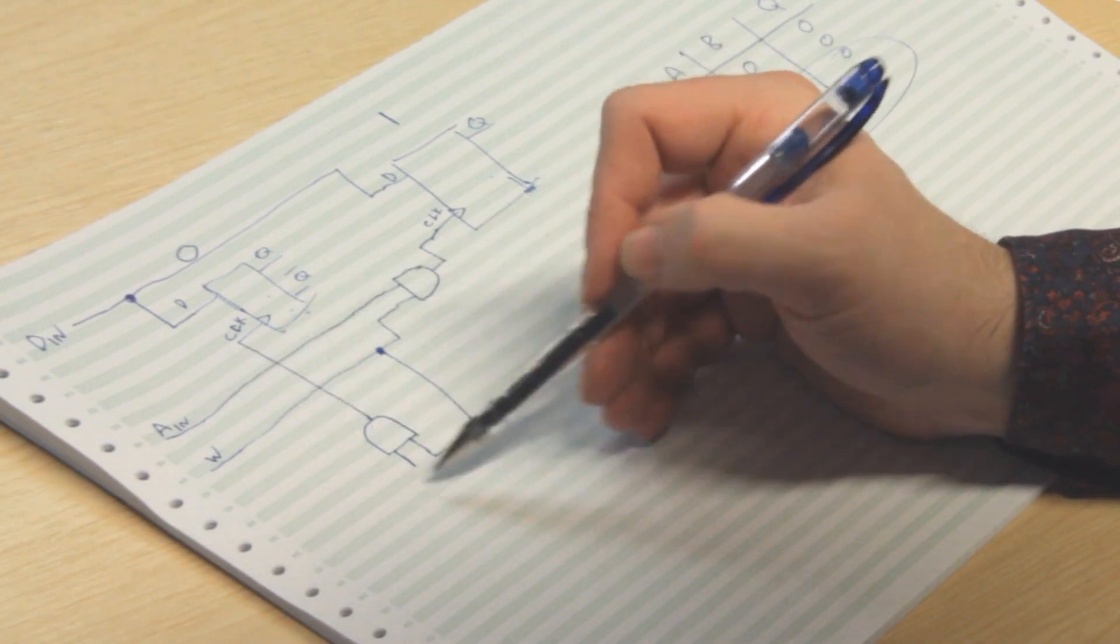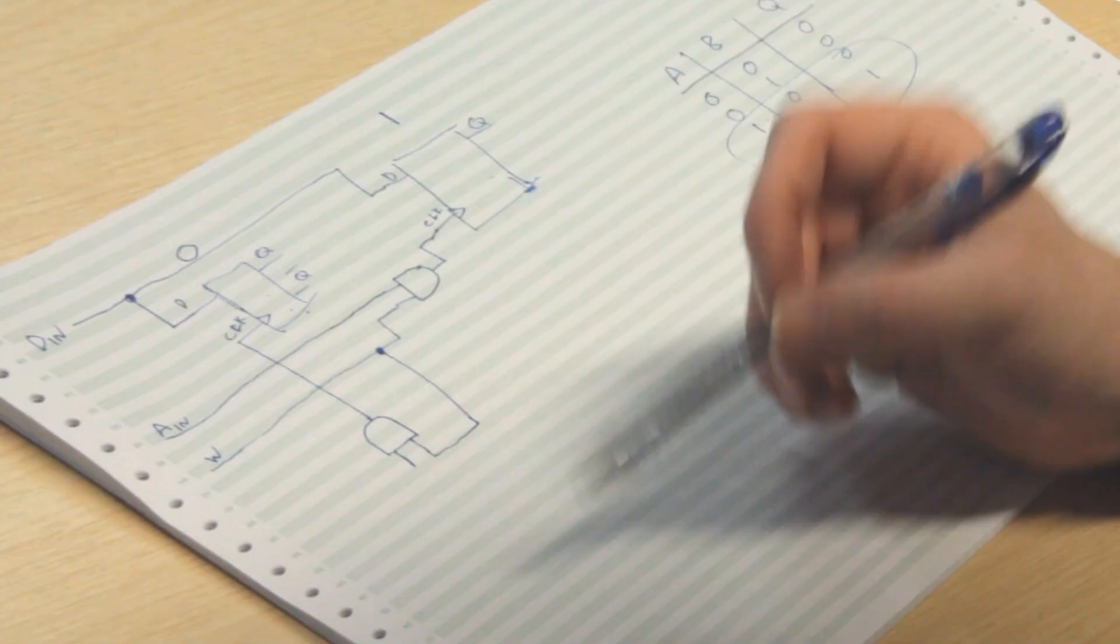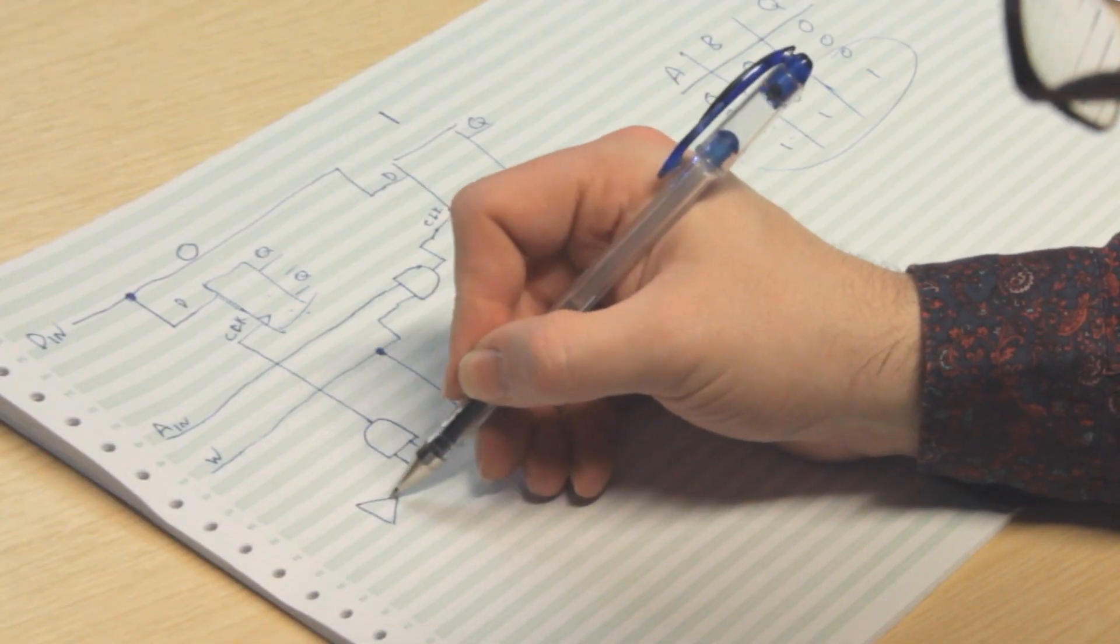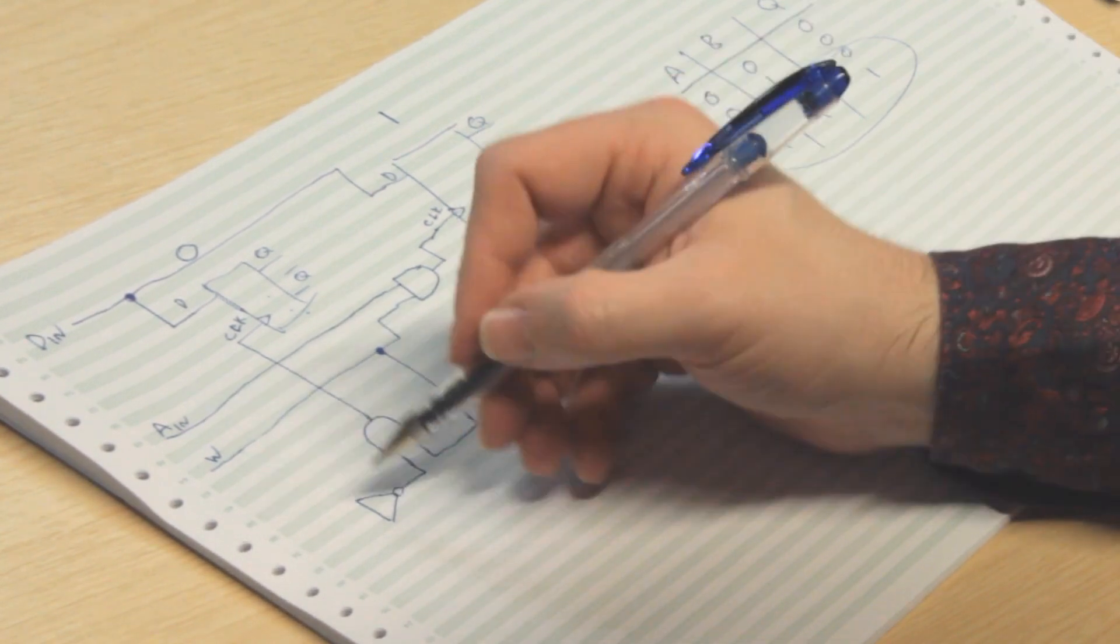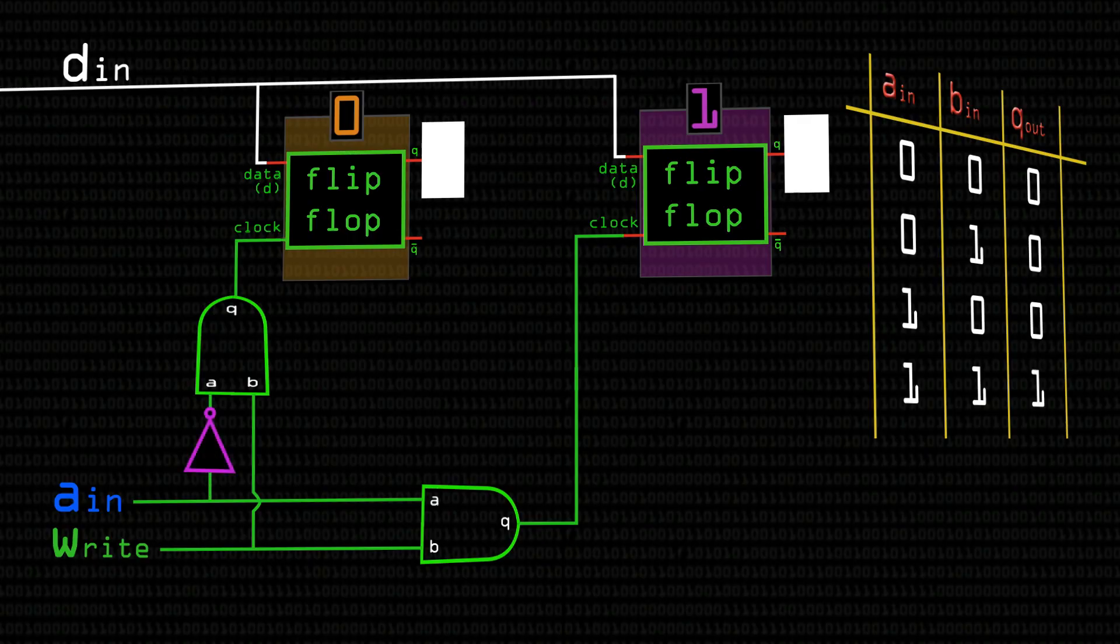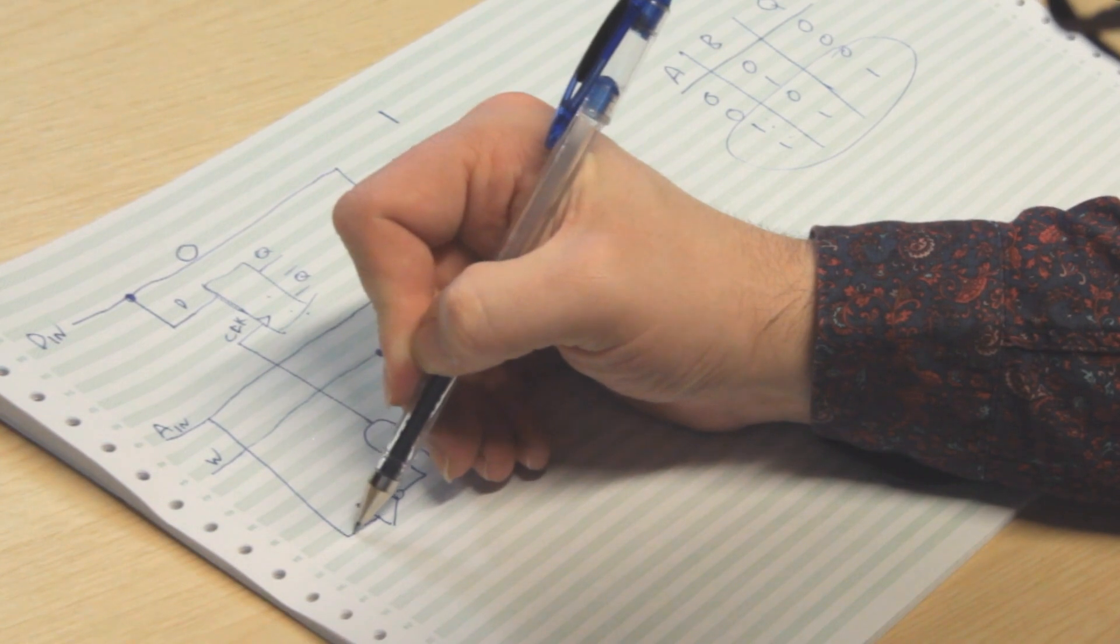But we need this thing to be one whenever AIN is zero. So the way we do that, again, remembering your digital logic, is that we use a simple NOT gate, like this, which just inverts it. So when the input to the NOT gate is zero, the output is one. When the input to the NOT gate is one, the output is zero. So we can connect this in like so.